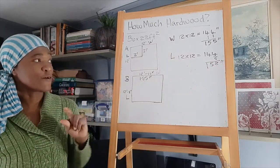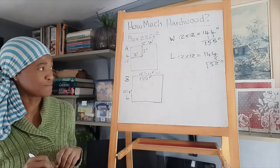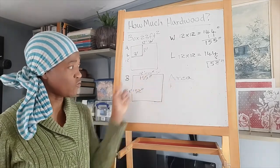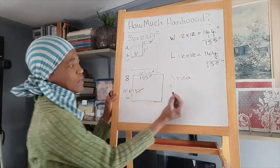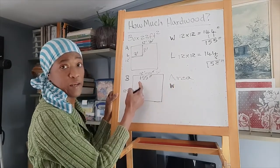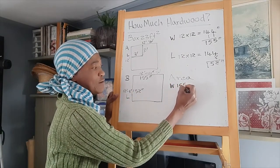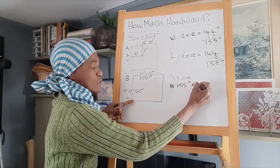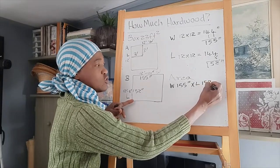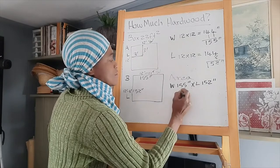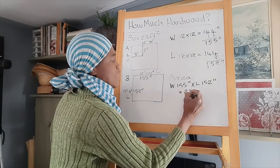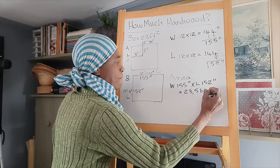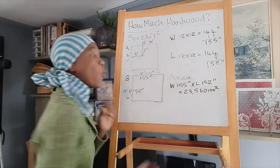Therefore, in order to find the area of the room, we will have to multiply the width which is 155 inches by the length which is 152 inches. So that equals 23,560 inches squared.